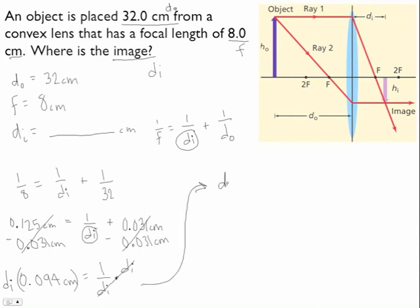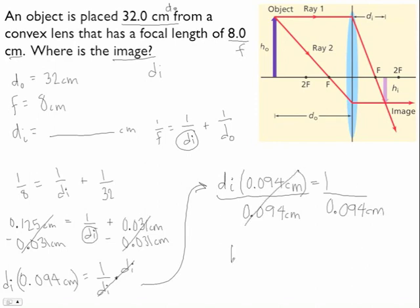I have di times 0.094 centimeters equals 1. Now we've got di on the top, but he's still not by himself, so the next thing we need to do is divide both sides by 0.094 centimeters.